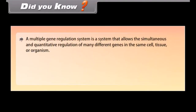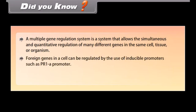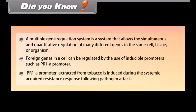Did you know: a multiple gene regulation system is a system that allows the simultaneous and quantitative regulation of many different genes in the same cell, tissue, or organism. Foreign genes in a cell can be regulated by the use of inducible promoters such as the PR1A promoter. The PR1A promoter, extracted from tobacco, is induced during the systematic acquired resistance response following pathogen attack.